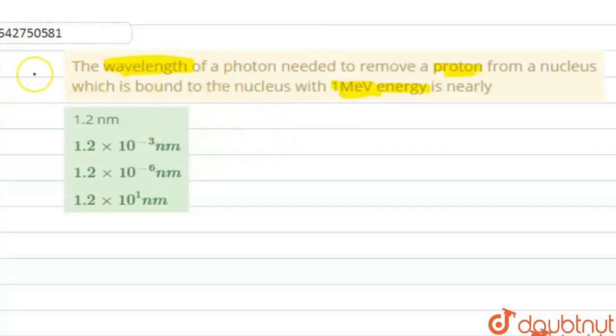See, it is in MeV, correct? So we will write it in joules. The energy is given to be 1 MeV. M is mega electron volt.